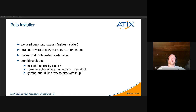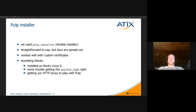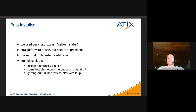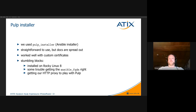A good thing about the Ansible installer is that you can configure custom certificates for the web server. By default it will create self-signed certificates, giving you those browser warnings about insecure connections, but you can simply specify certificate paths via variables to the Ansible installer so those certificates will be used upon installation.